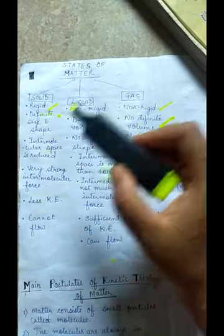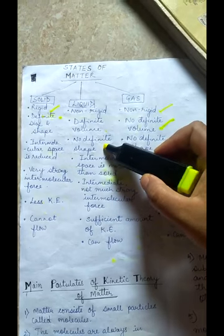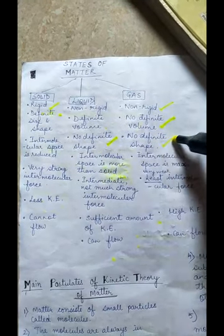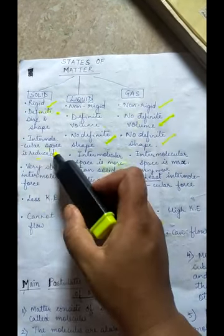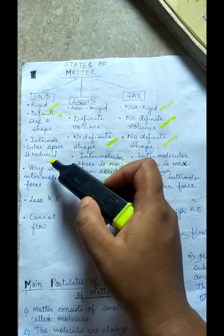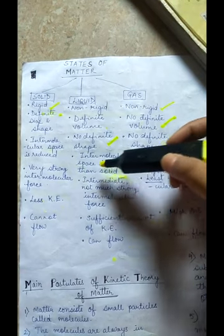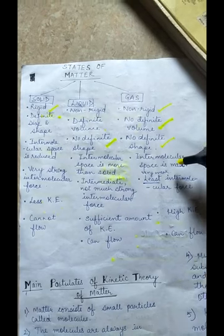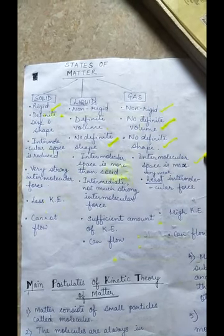In solids, they have a definite shape. But in liquids, there is no definite shape — they take the shape of the container in which they are kept. In gases, they also do not have any definite shape. The intermolecular space is negligible in solids, intermediate in liquids, and maximum in gases.